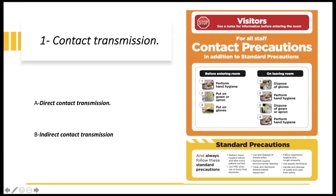What are contact precautions? Standard precautions plus hand hygiene, gown, and gloves. This is very important to do if your patient is labeled as contact precaution. On leaving the patient's room, you should dispose of the gloves and gown and then perform hand hygiene.